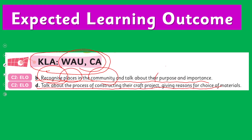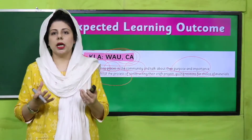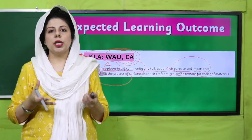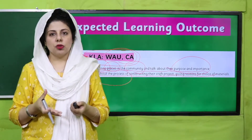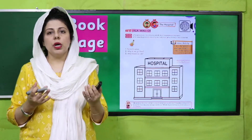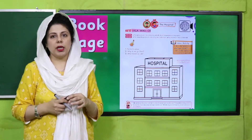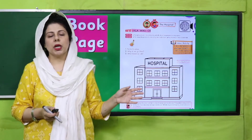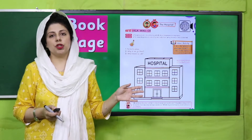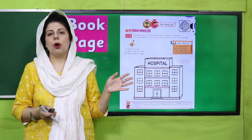Ye community places hamaare liye ehmiyat rakhte hain. Iske saath saath ek choti si art ki activity ko bhi incorporate karne ki koshish karenge taake koi ek tangible material bacho ke paas ho jis ko woh yaad rakh sake. Aaj kitaab ka safha dekhiye, bacho yeh kya hai? It is a picture of a hospital.